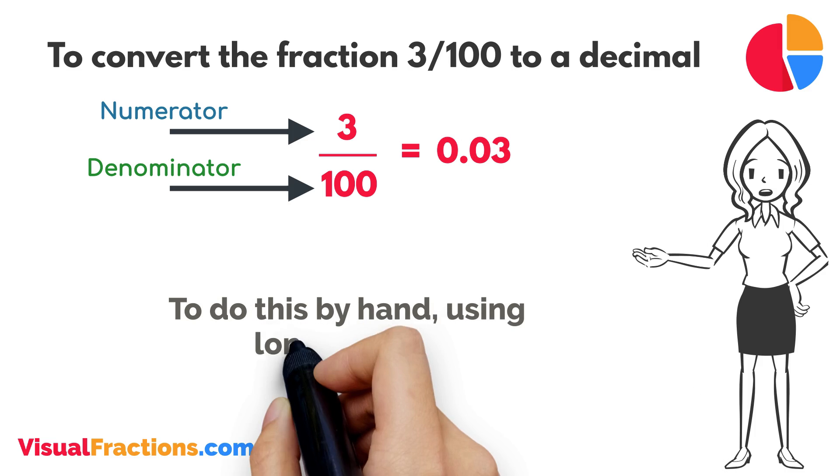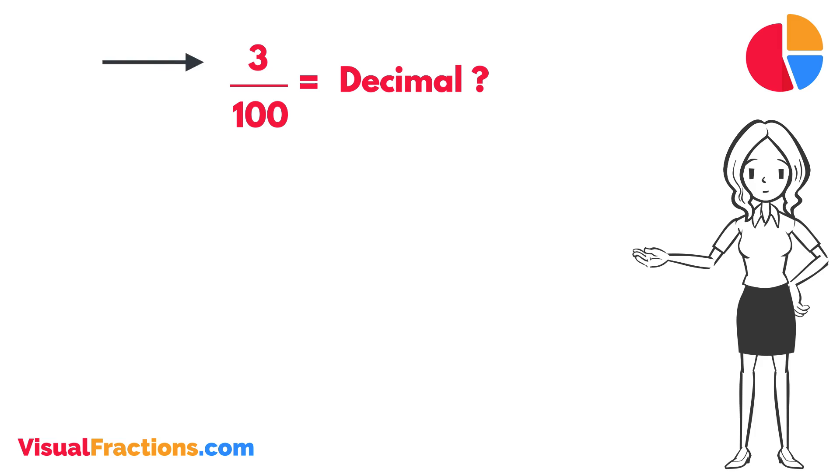To do this by hand using long division, we start by writing 3 as the dividend and 100 as the divisor. Since 100 doesn't fit into 3, we add a decimal point in our answer and append 2 zeros to 3, making it 300.